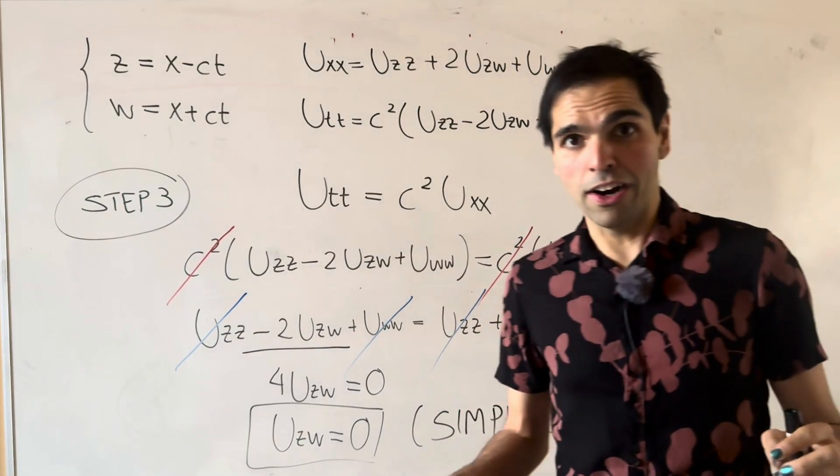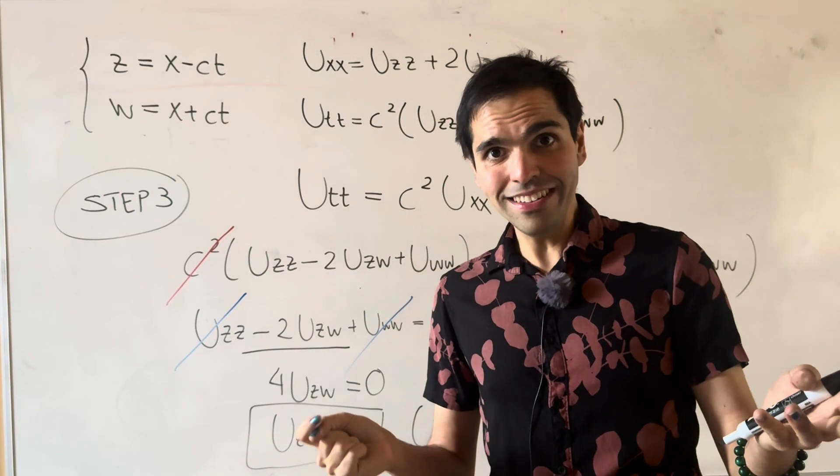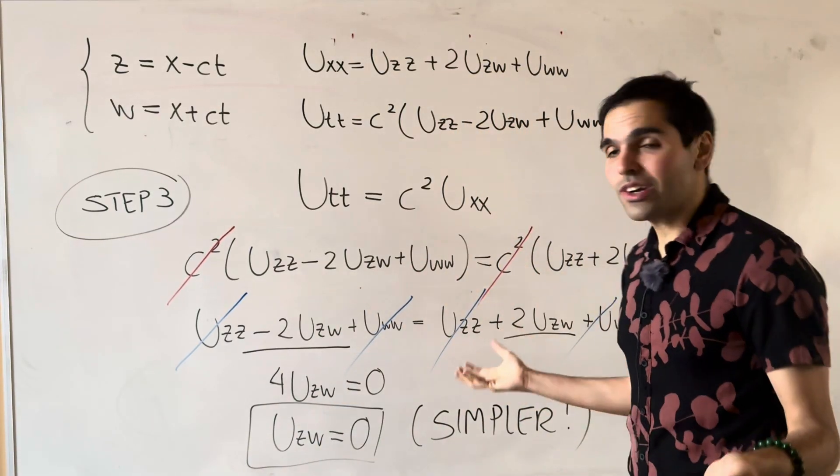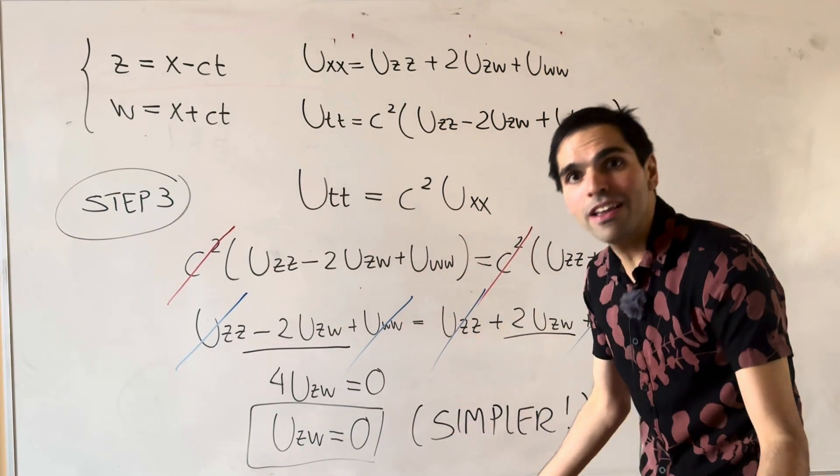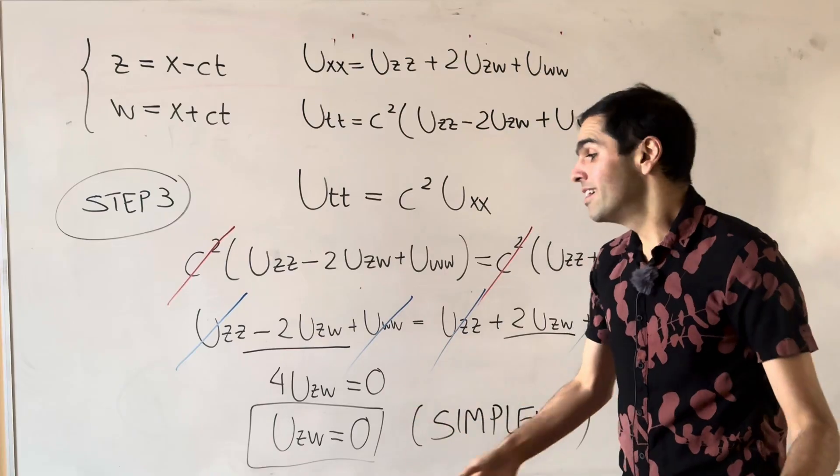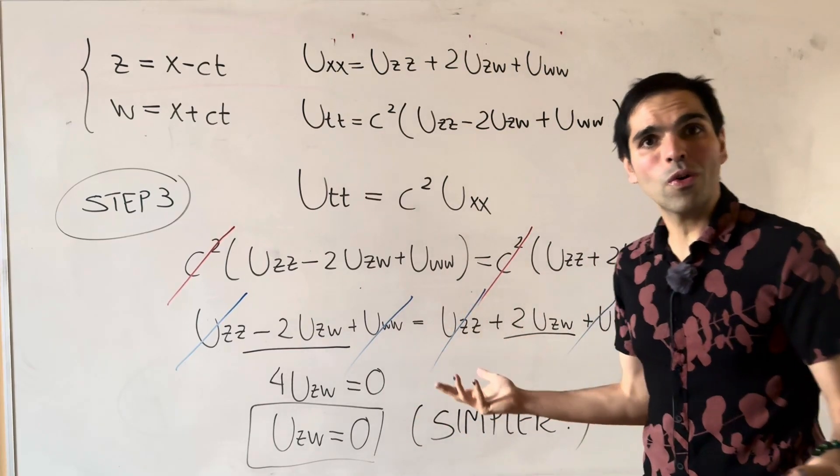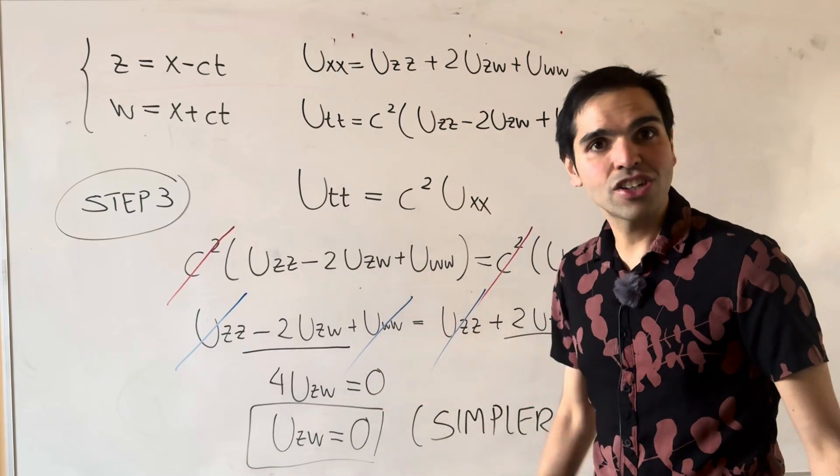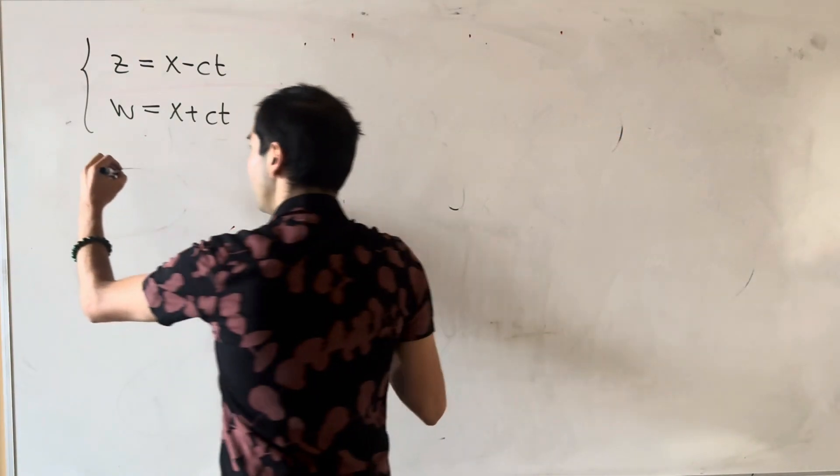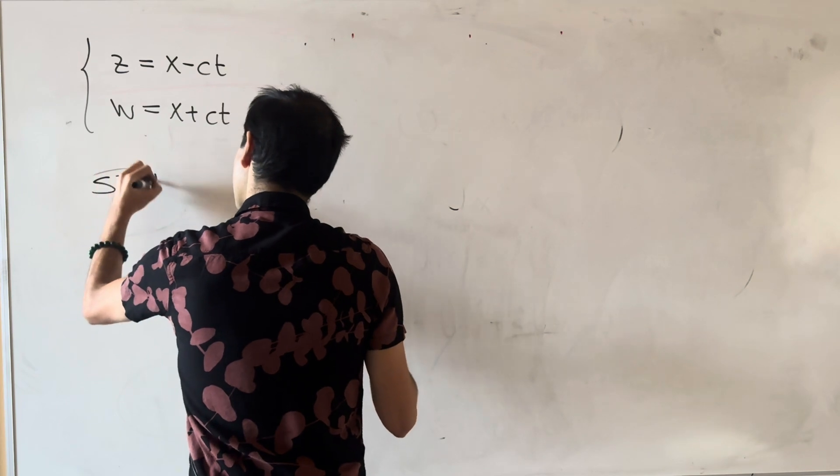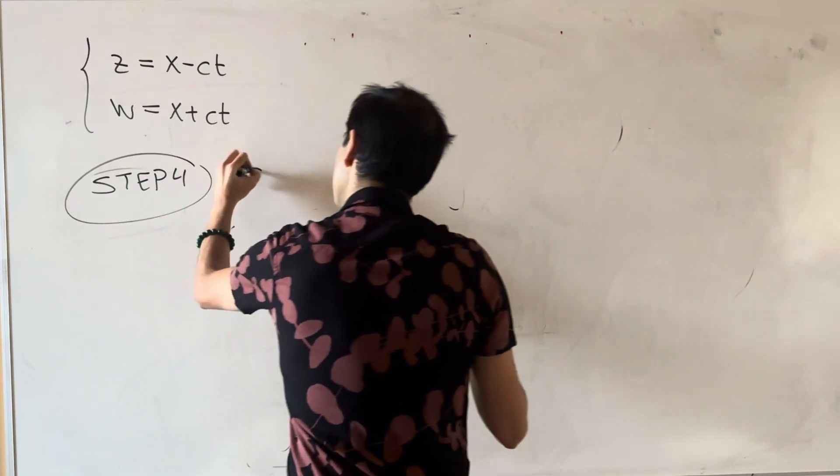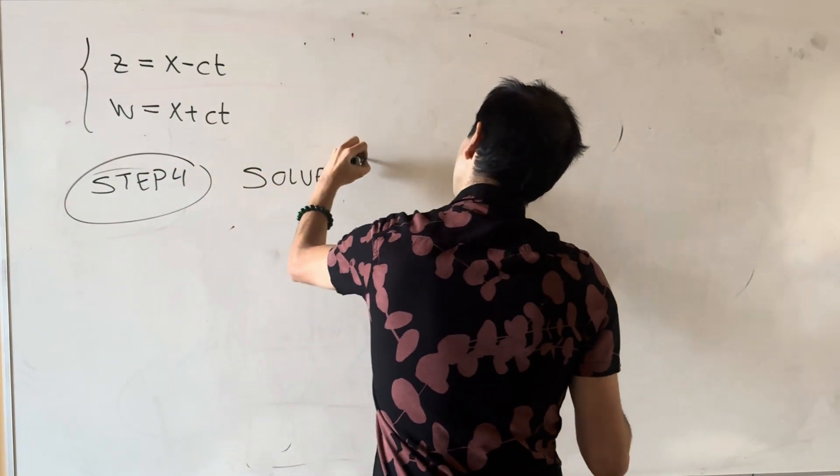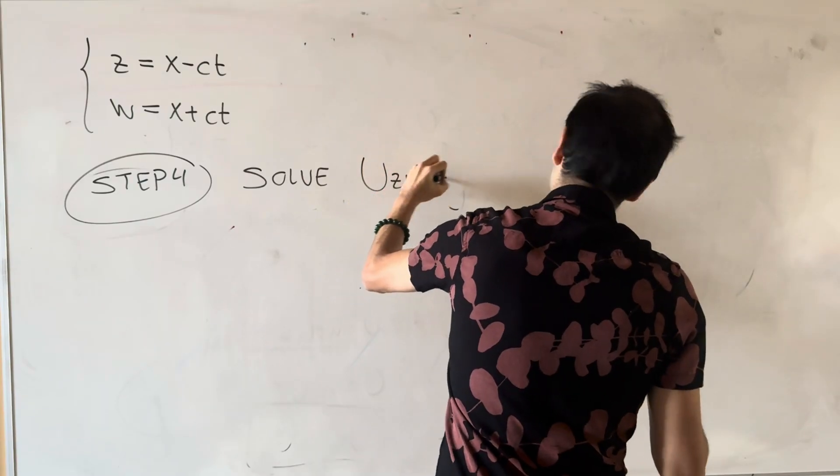So just like u-substitution in calculus, if you do it correctly, it will simplify your integral. And here, if you do coordinate method correctly, it will simplify your PDE. And now we can actually solve it. So now let's solve U_zw equals zero.